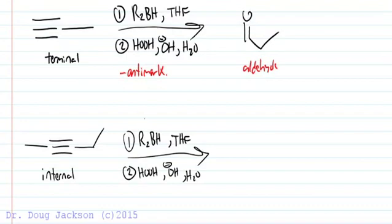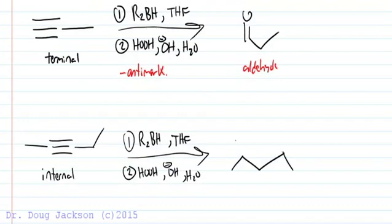We can use 9-BBN or BH3 for internal alkynes. The greater steric hindrance prevents multiple additions by the borane, which are possible with the extra pi bond. And what do we get? We get ketones — count up the carbons. And with a non-symmetrical alkyne, we have two possible products, so very similar to before.